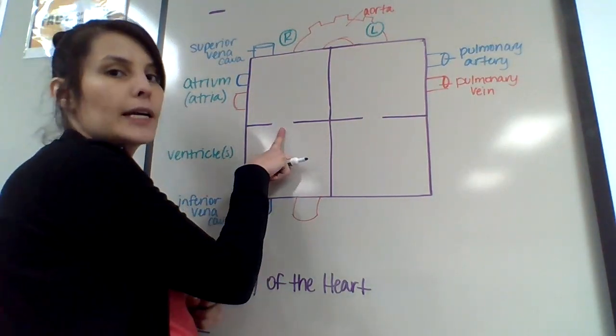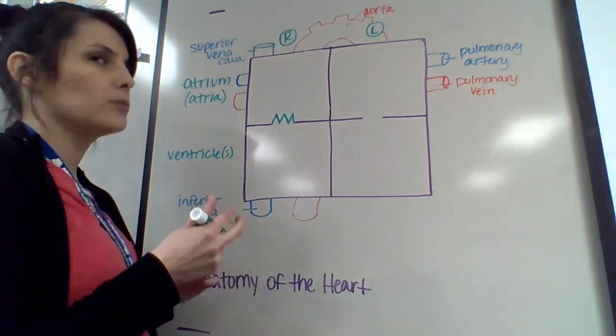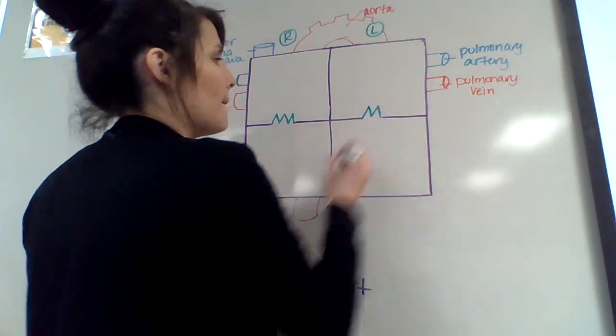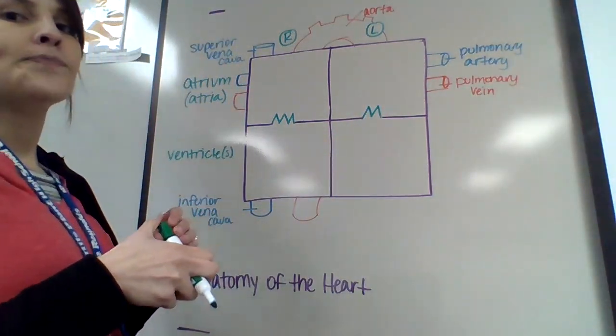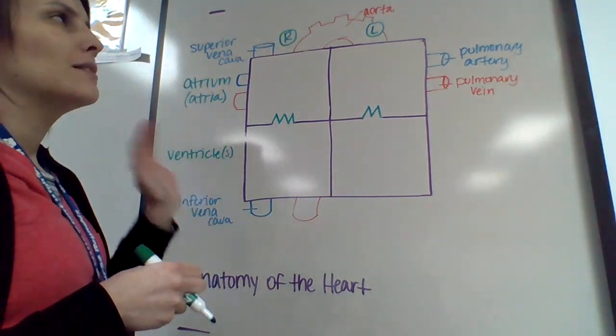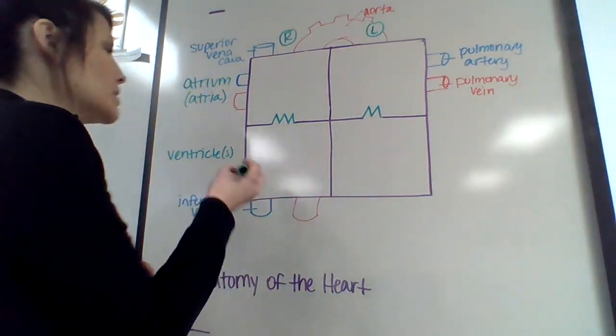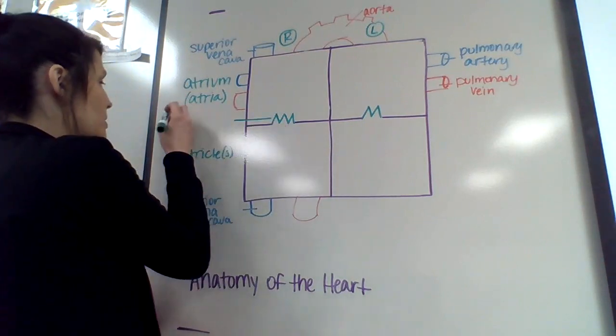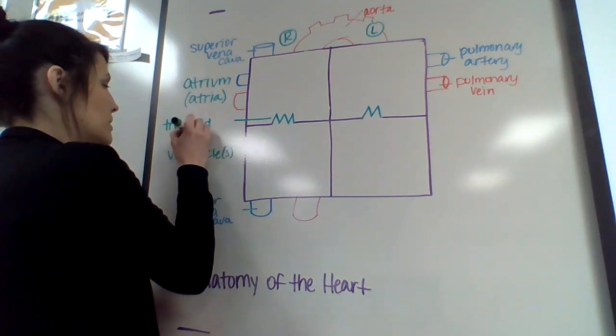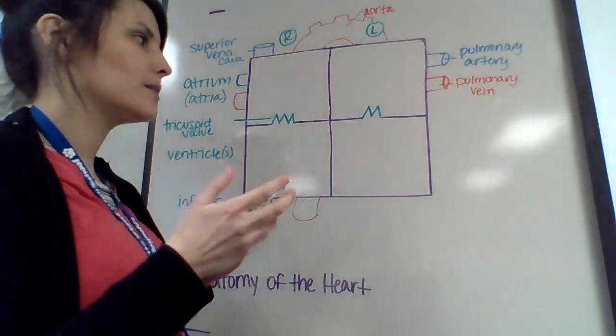So on this side, we're going to have a three-peaked mountain. It's very hard to say, three-peaked mountain. And over here, we're going to have a two-peaked mountain. Sometimes names in anatomy make sense, and sometimes names don't make sense. So it just kind of depends. So with this, we are going to be a tricuspid valve. Because it's got the three points on it, so it's tricuspid. Makes sense.